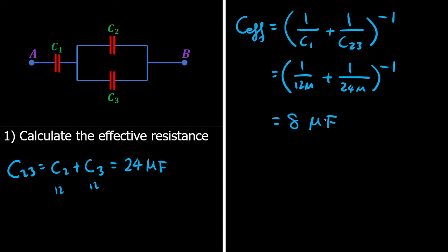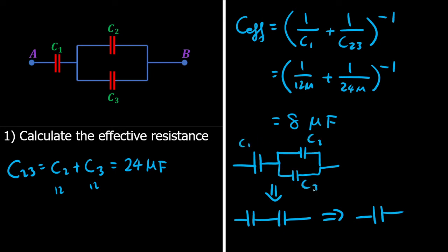So in essence, what you're doing is you're simplifying. So if we have this arrangement to begin with, we are simplifying it into this, and then we are simplifying that into one big capacitor. So if we have C1 here, C2 here, C3, again C1, and then C2-3, then we have the effective capacitance there.